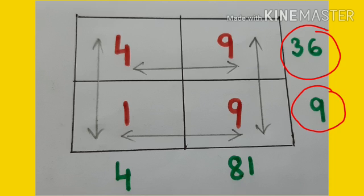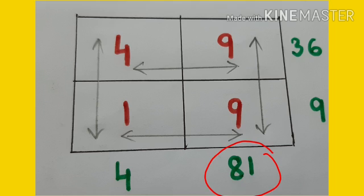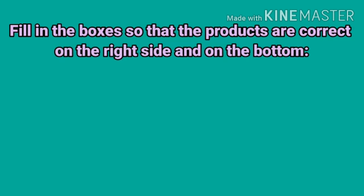See, 4 9s are 36 and 1 9s are 9, and if you look bottom 9 9s are 81 and here 4 1s are 4. Let's children solve another puzzle.